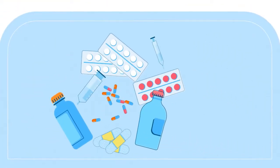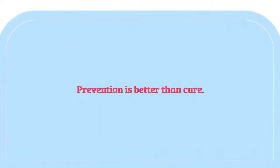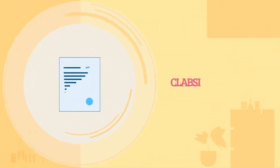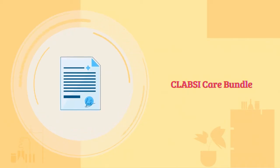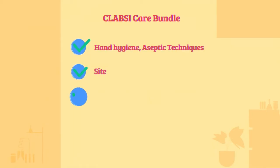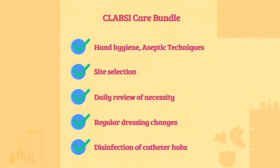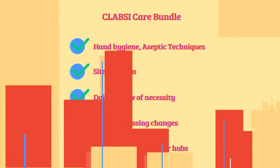Now that we've summarized how CLABSIs develop, let's learn how to prevent them. The application of a CLABSI care bundle is essential in reducing and even eliminating the risk of CLABSI. The CLABSI care bundle includes proper hand hygiene, aseptic techniques, site selection, daily review of necessity, dressing changes, and disinfection of catheter hubs.